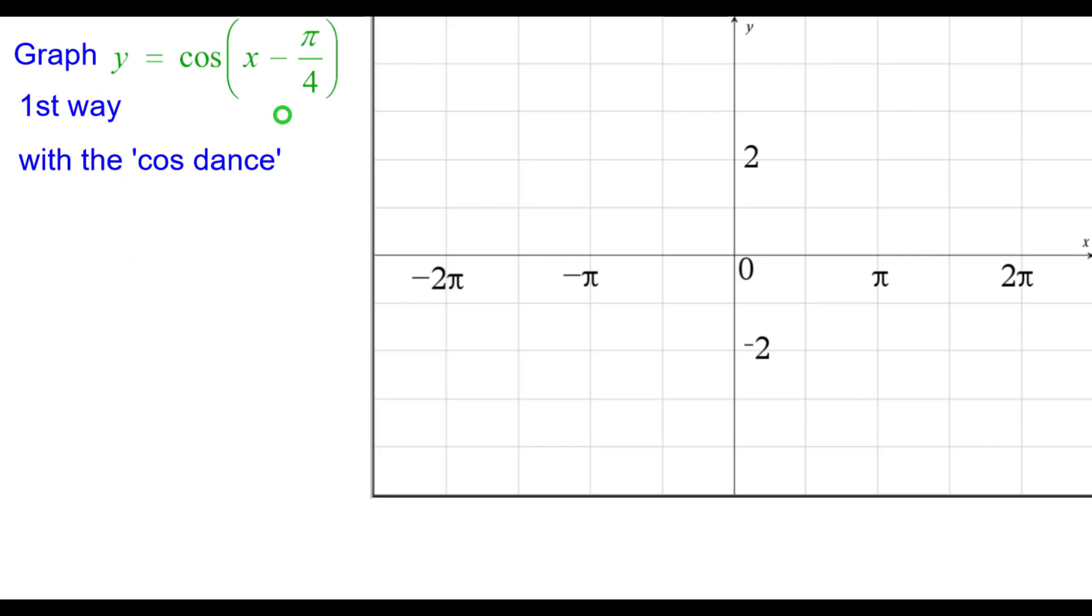Graph y equals the cosine of the quantity x minus pi over 4. The first way is with what we call the cosine dance. We need to recall what the graph of cosine looks like and the five key points of interest, which we will circle here.